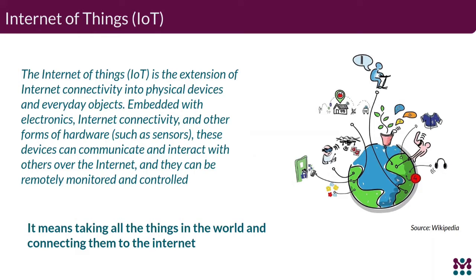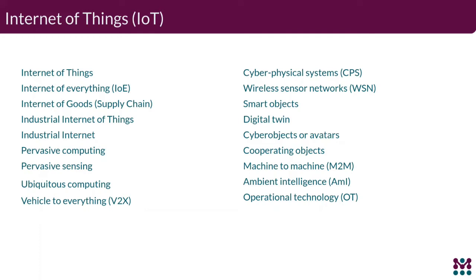Internet of Things — the Wikipedia definition basically means connecting all the things in the world to the internet. There's a naming zoo where everyone invents their own name: internet of everything, and so on. There are a lot of names for the same thing. I'm focusing on devices running embedded Linux, because that's where we operate.